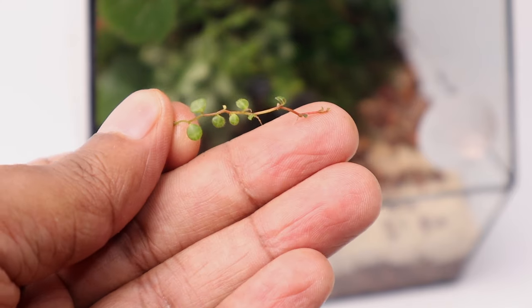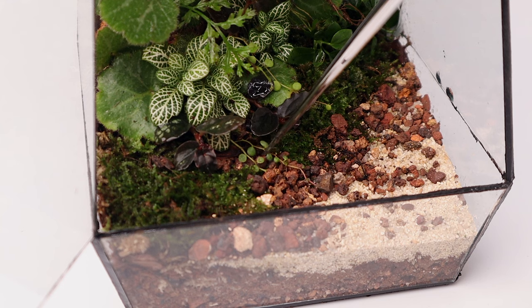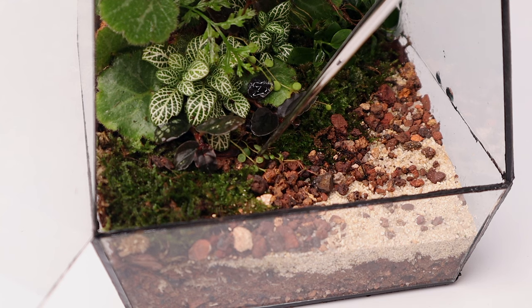Finally, I placed a couple of very tiny cuttings of peperomia prostrata in the foreground. This completes the planting for this scape.